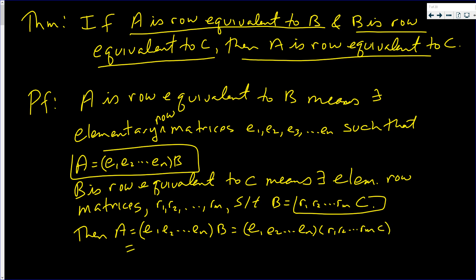But this is nothing more than E1, E2 up to En, R1, R2 up to Rm times C. That is, if you multiply C by a number of elementary row matrices you get back A.